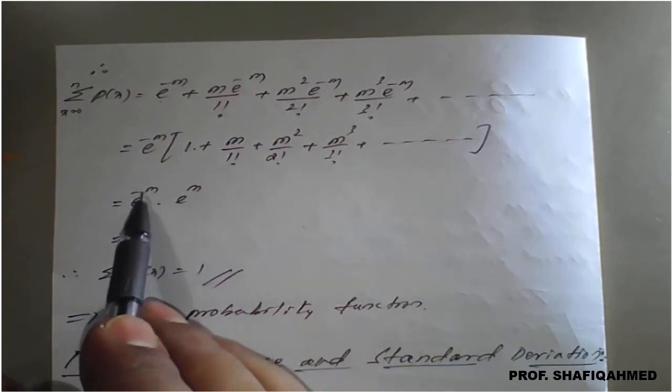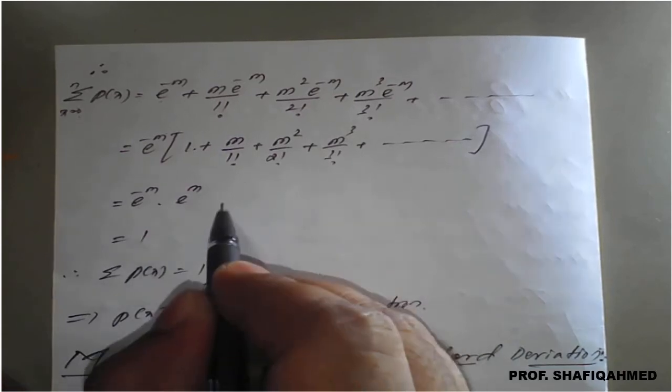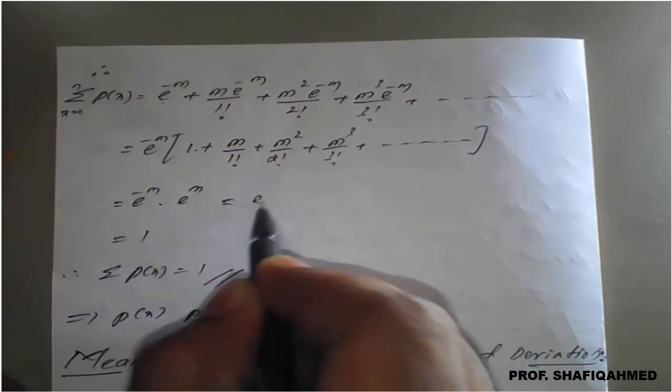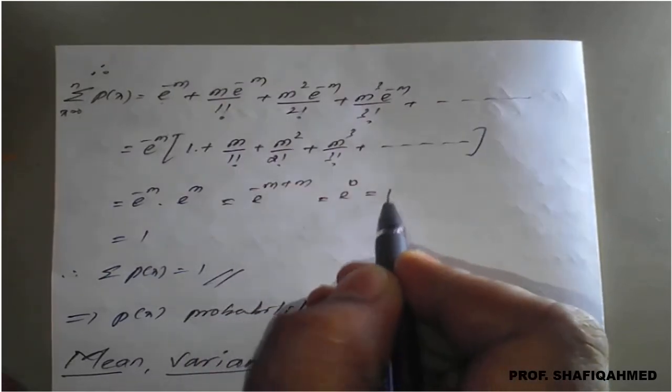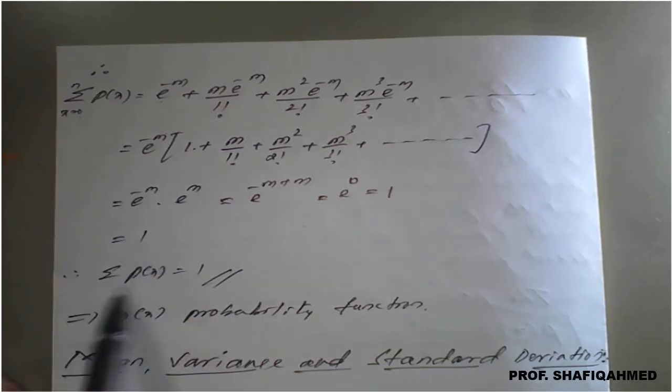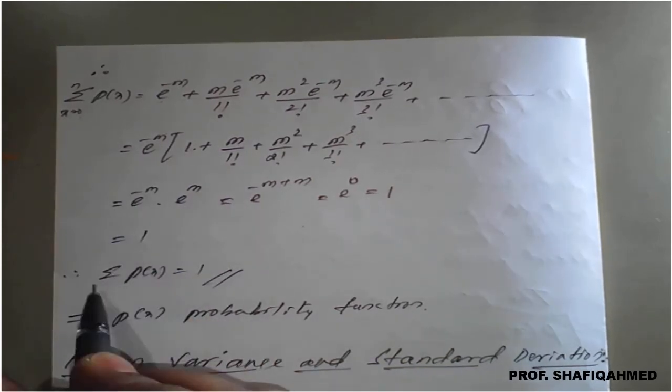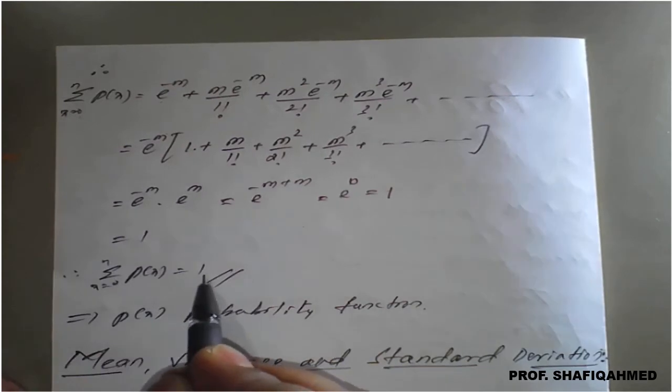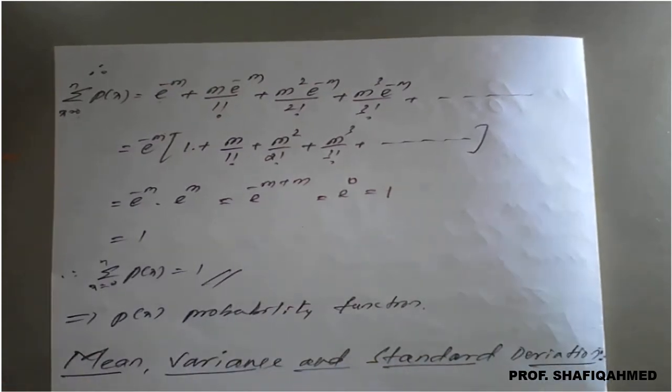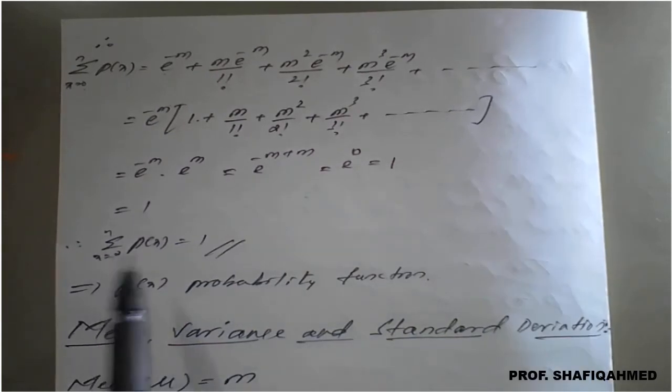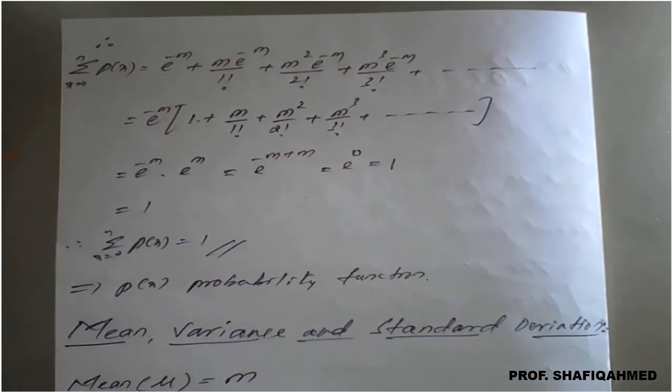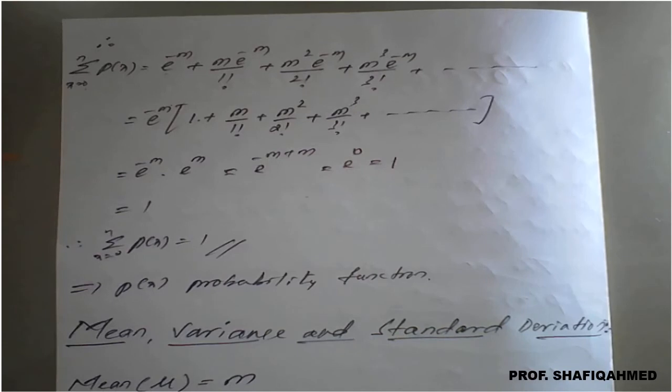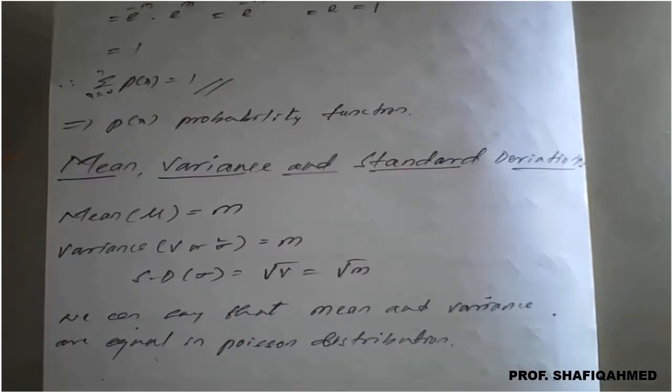Therefore, e raised to minus m, e raised to plus m - bases are the same - you can mention this as e raised to minus m plus m. Both cancel, will get e raised to 0. E raised to 0 is 1; that is why it is 1. Therefore, you have proved the second condition: summation P(x), x from 0 to n, equals 1. If it satisfies first condition and second condition, we can say that the given P(x) is a probability function.